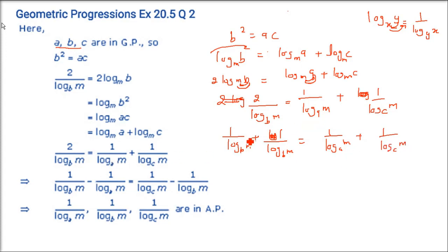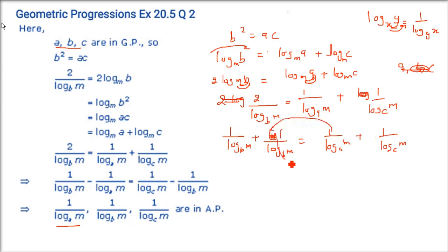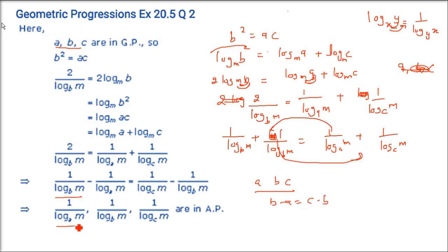Now you can rearrange — take log_A M on the right-hand side and 1/log_B M on the right-hand side. When three values are in AP, ABC, B − A = C − B. So now these three terms 1/log_A M, 1/log_B M, 1/log_C M are in AP.